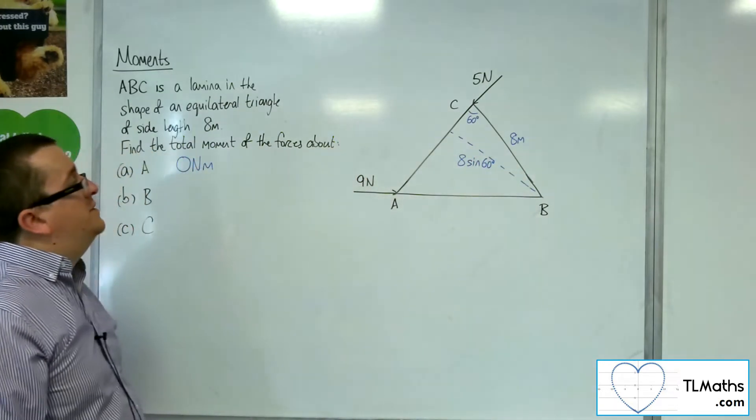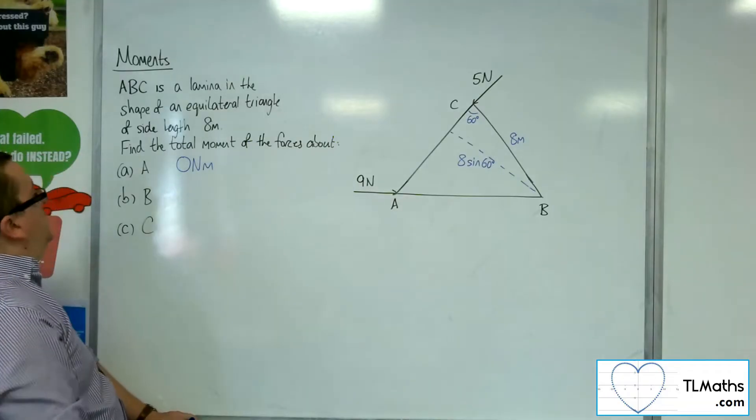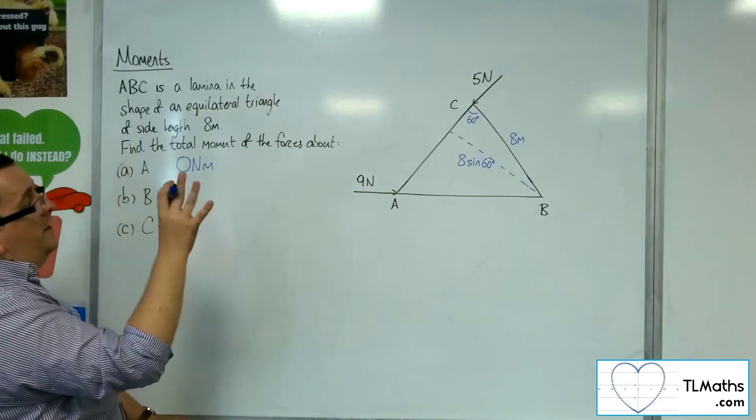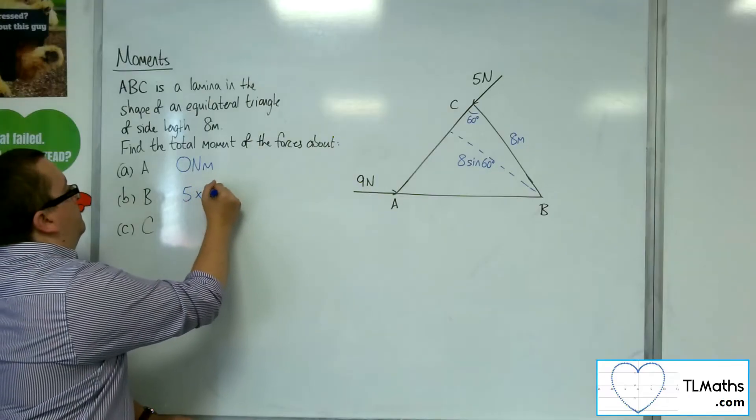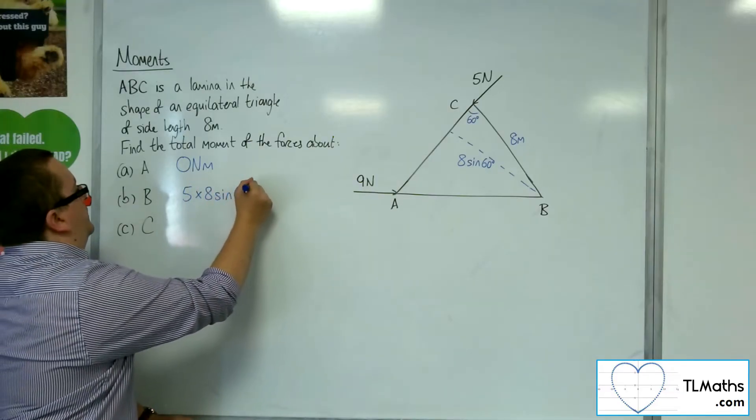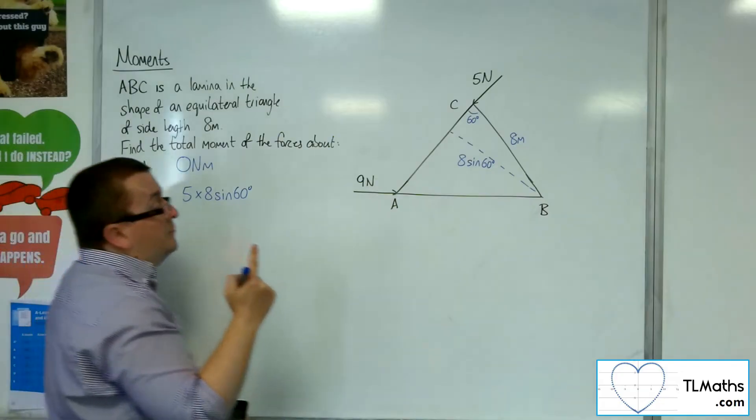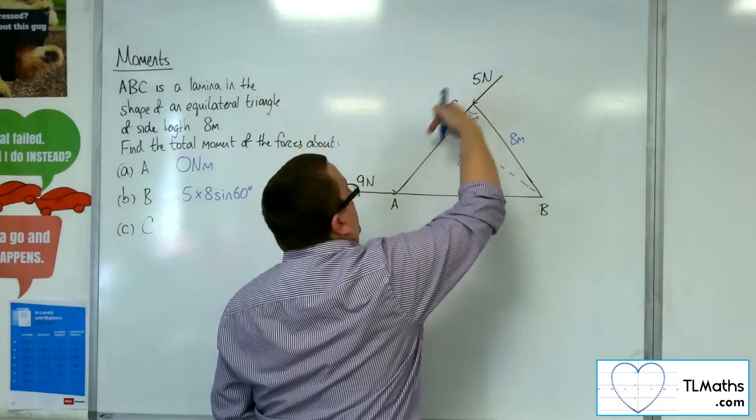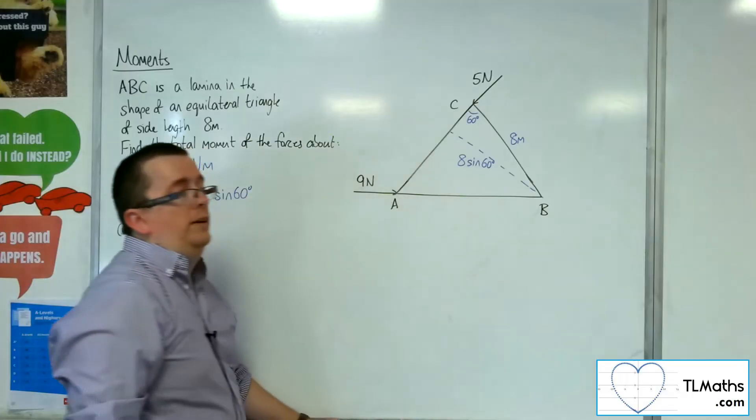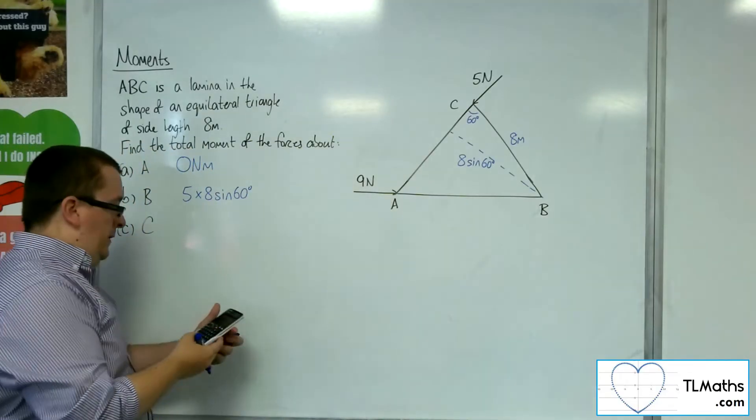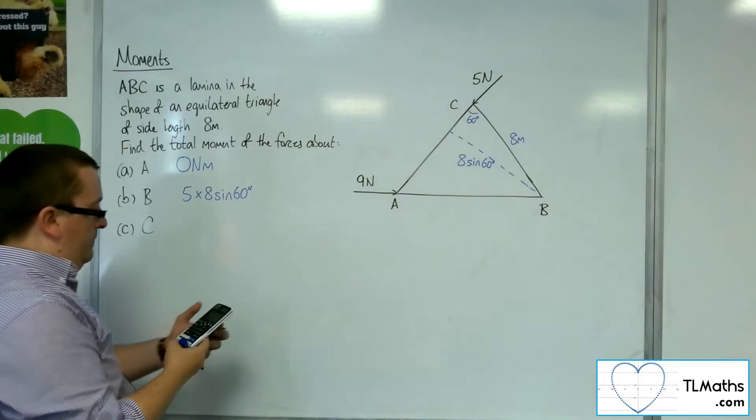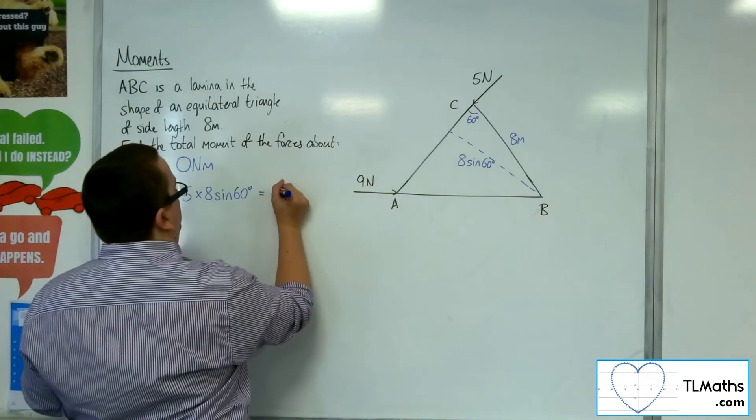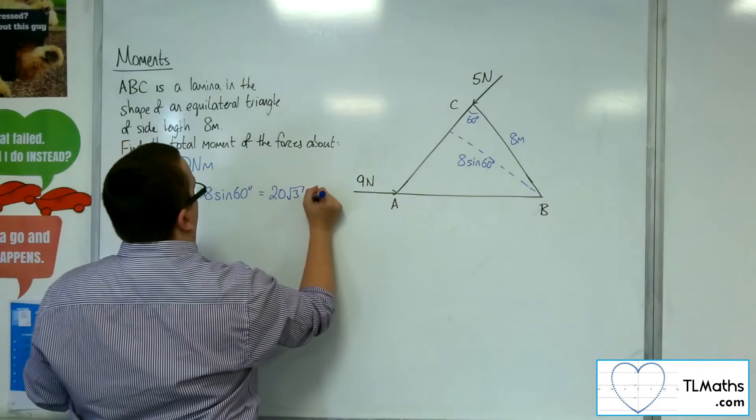That would be the perpendicular distance. And so we would have 5 times 8 sine 60, and because we're going around that way, we're going around anti-clockwise, and so it's going to be positive. So 5 times 8 times sine 60 is 20 root 3 newton metres.